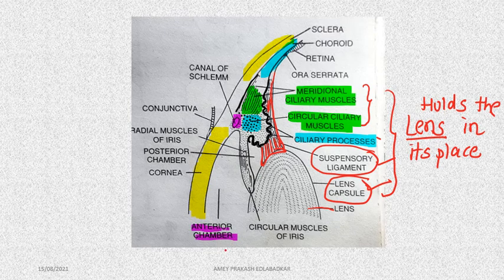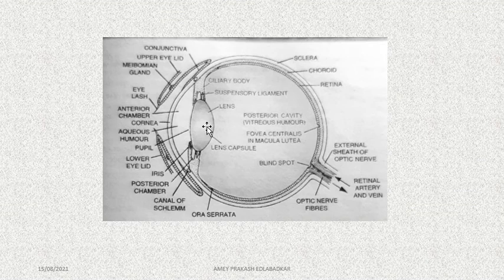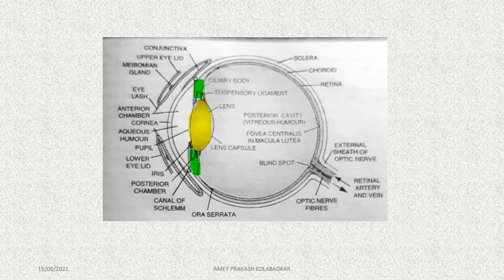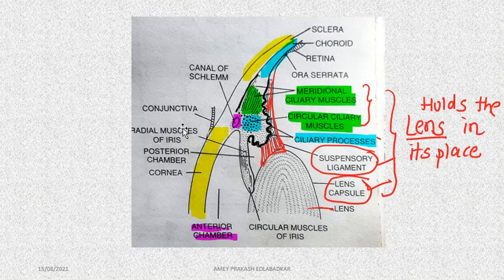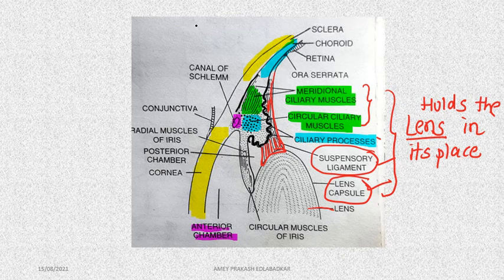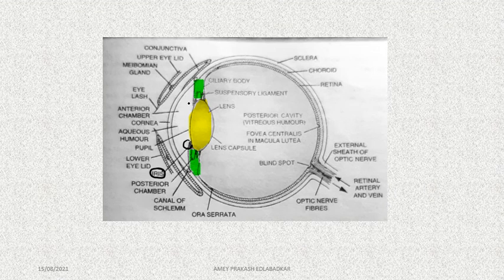Moving on to the iris — coming back to the diagram, the lens is held by the ciliary body above and below, and very close to it is the iris. The iris is a circular muscular diaphragm containing pigment, which gives the eyes their color. The iris divides the anterior area into the anterior chamber filled with aqueous humor, and the posterior cavity of the eye filled with vitreous humor.